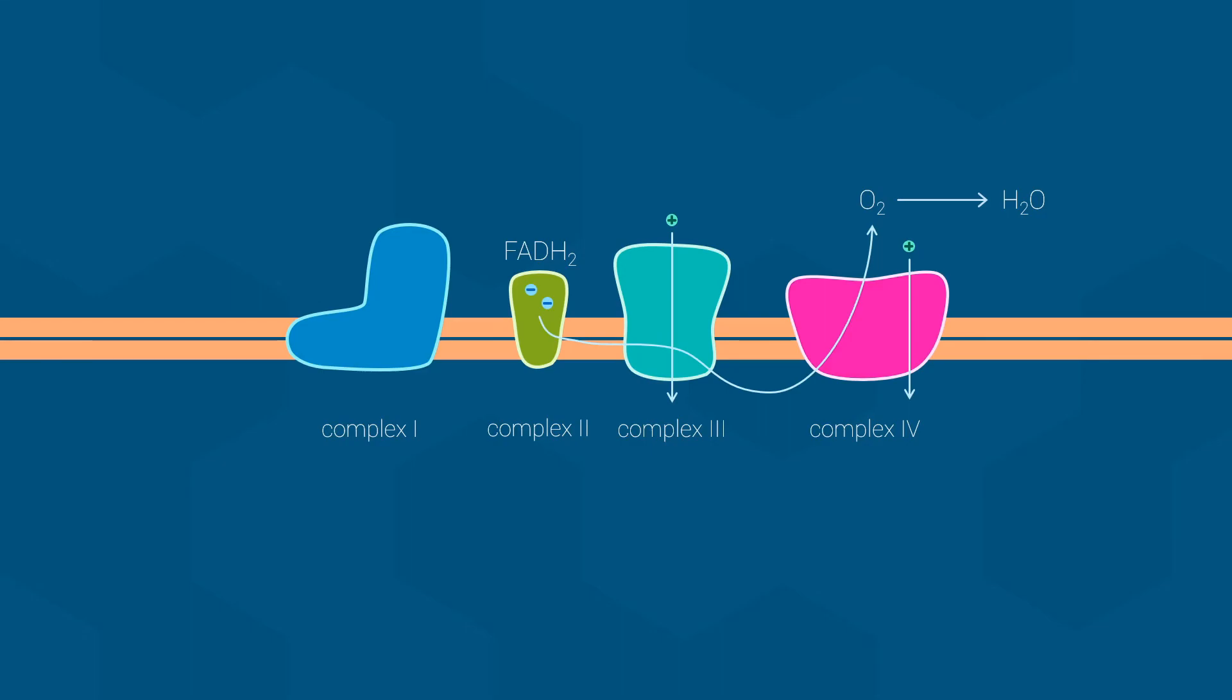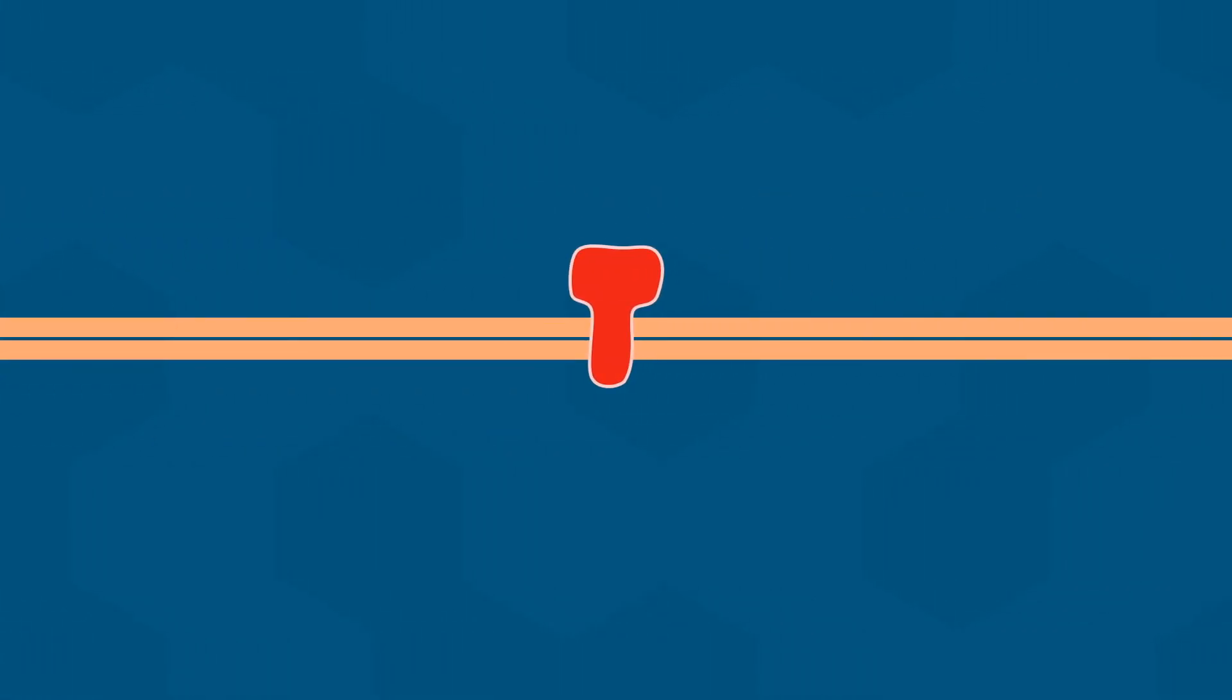So, by this point, the cells have used redox reactions to transfer a lot of potential energy from glucose into a proton gradient. So that begs the question, how does all of this potential energy end up as ATP? Well, that happens in the very final stage of oxidative phosphorylation.